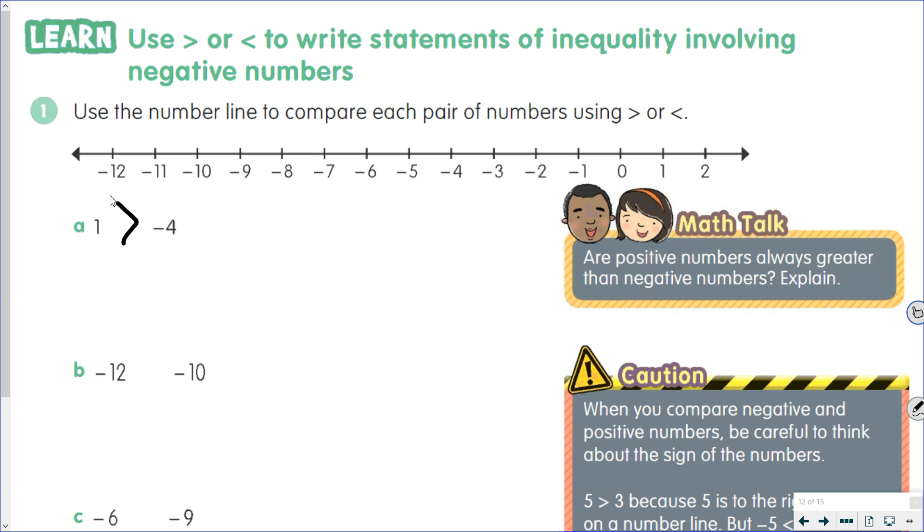For part B, we have negative 12 compared to negative 10. If we look at our number line, here's negative 12, here's negative 10, and negative 12 is to the left, which makes negative 12 smaller than negative 10.